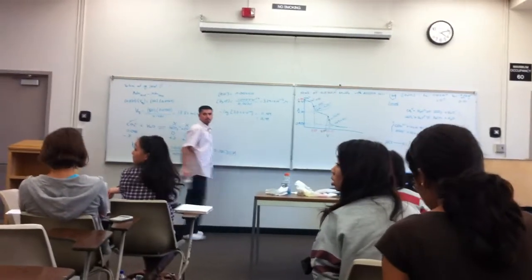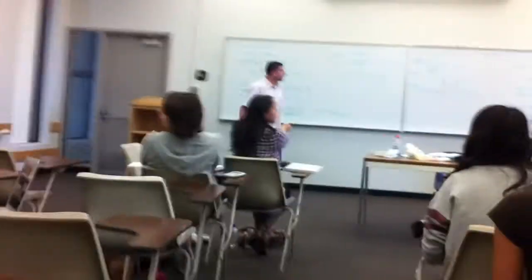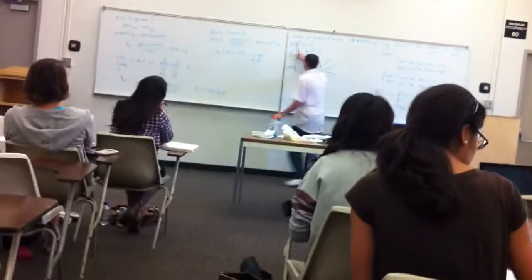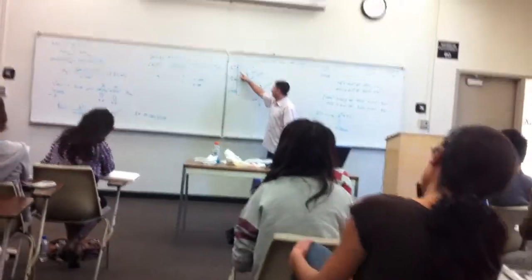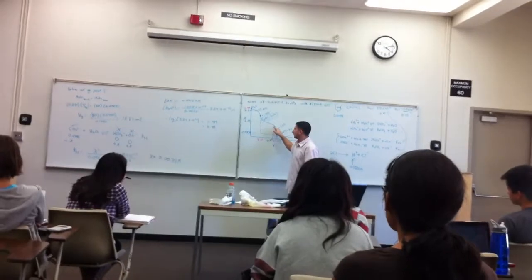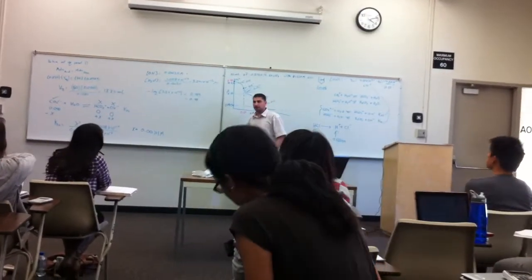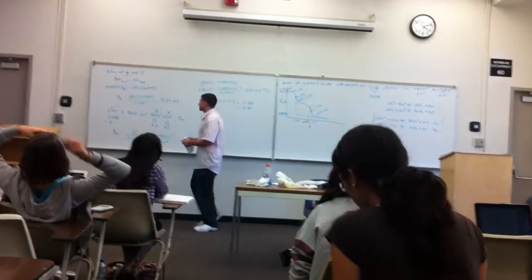After you find this one, you follow up the buffer equation. Why? Because, okay, at this point, it's about 5 or 4. So 4 is acidic. So you use the acidic buffer equation.